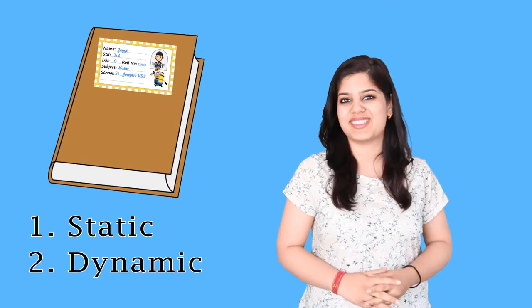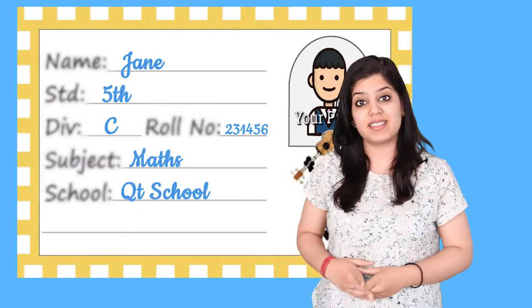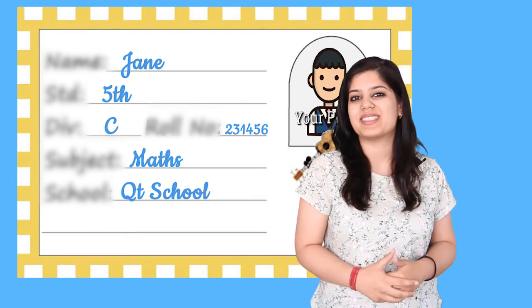A label has two parts: one is static, whose value doesn't change, and the other is dynamic, whose value changes. For example, let's take a look at this label. Can you guess which part is static and which part is dynamic? Well, the categories stating name, grade, and school are static — it is common in all the labels. Whereas the values stating Jane, 5th grade, and QT school are dynamic, since it varies from person to person.